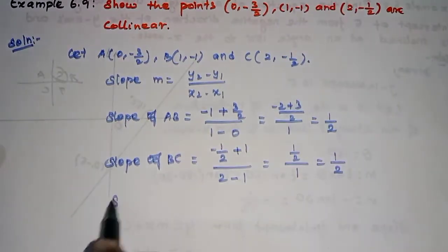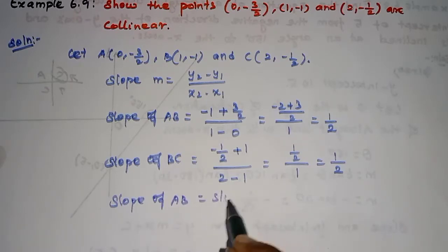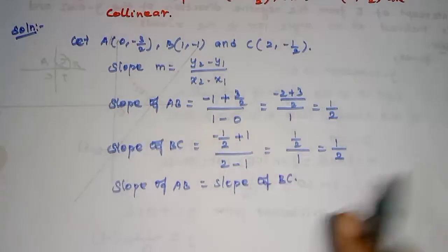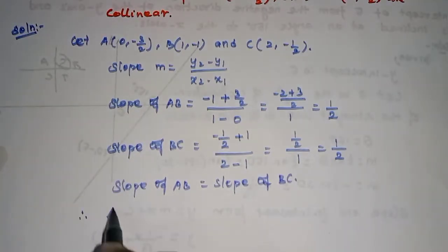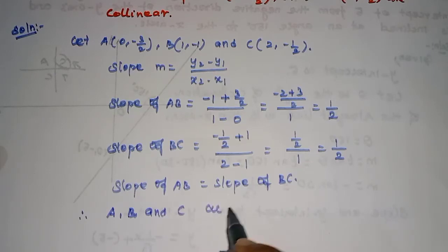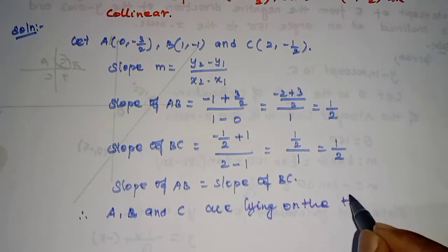Therefore, slope of AB is equal to slope of BC. Therefore, A, B and C are lying on the same line.